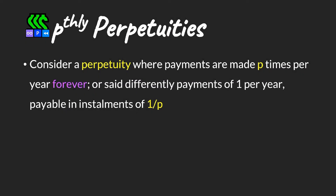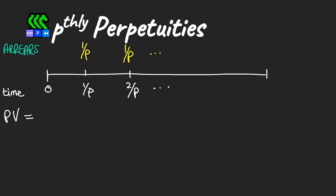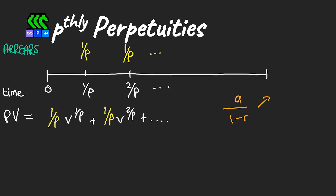We can also consider a perpetuity where payments are made p times per year forever — equivalently, payments of 1 per year payable in installments of 1/p. The cash flows are paid at 1/p intervals in arrears. Rewriting these cash flows on a timeline, we calculate the present value using the geometric series formula, where 'a' equals (1/p) times v^(1/p) and 'r' equals v^(1/p).